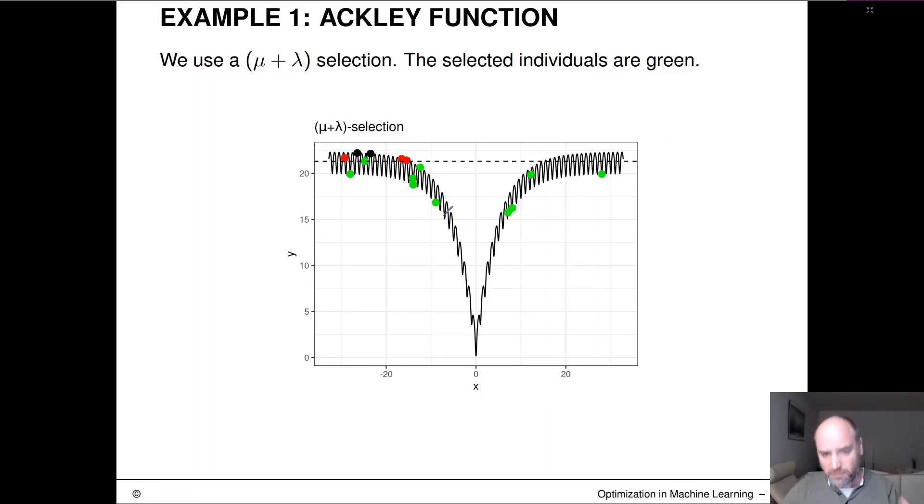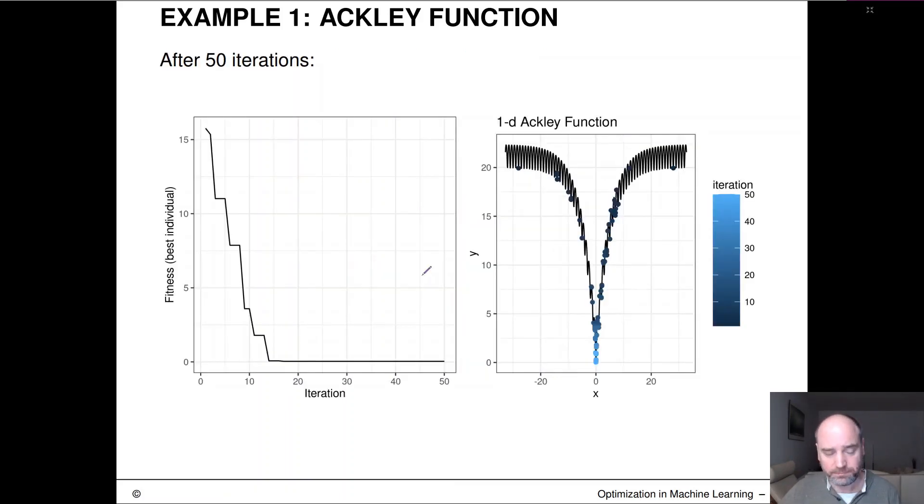Now we have 15 guys, and we have to reduce them again to 10. So we simply take the 10 best of these and then iterate the whole thing and let it run. And here you can see now how fitness evolves. And we can actually see that after a couple of iterations, we solve the function pretty well and we end up down here.